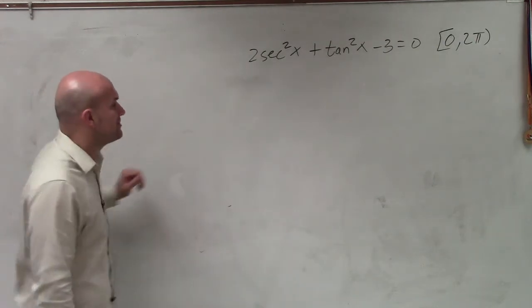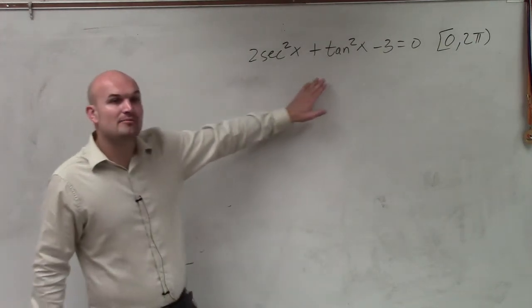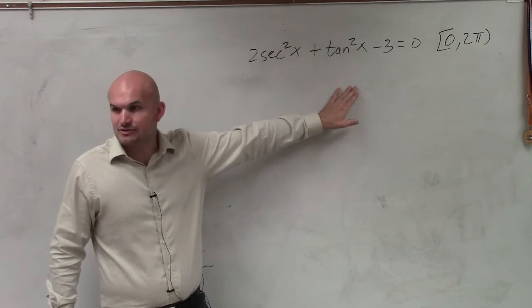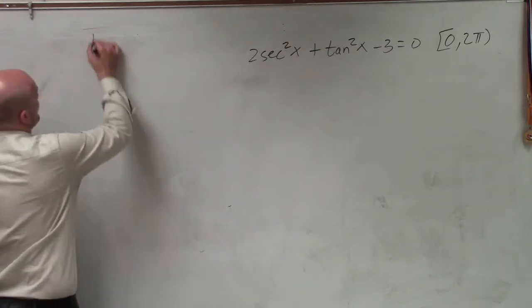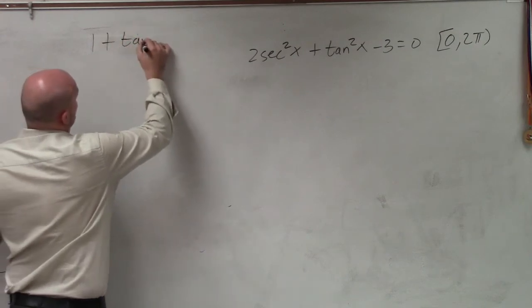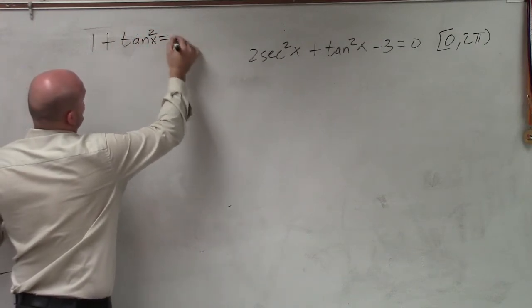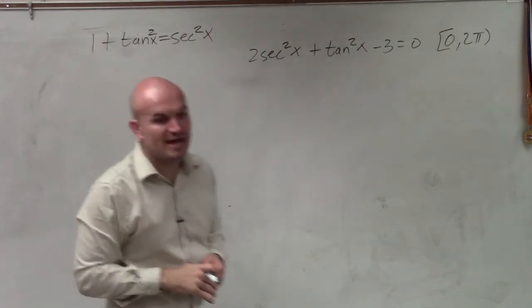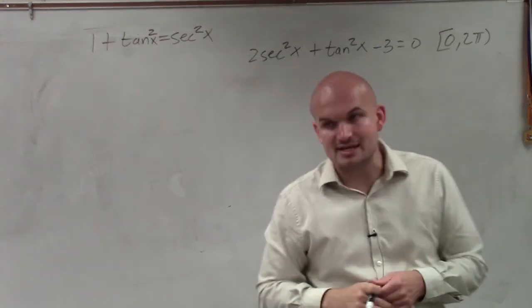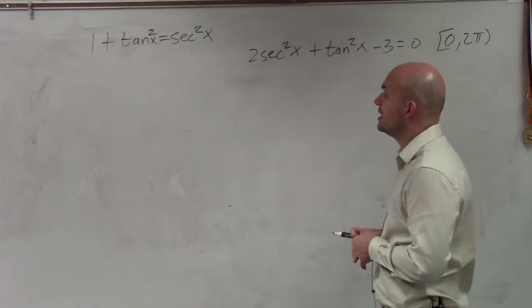So when I'm looking at my Pythagorean identities, I need to see, well, I remember that secant and tangent are related to each other. And it went, I believe, 1 + tan²x = sec²x. That was our Pythagorean identity with tangent and secant. And obviously you can alter that how you want to.